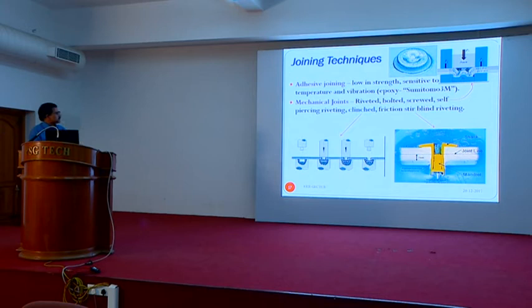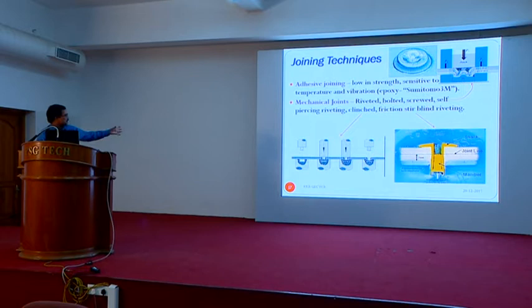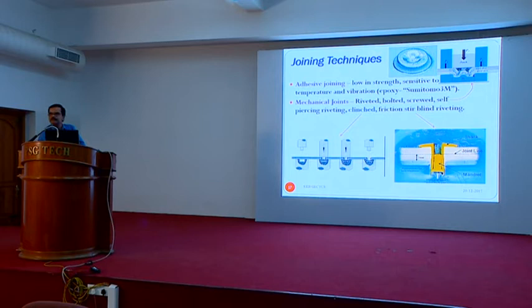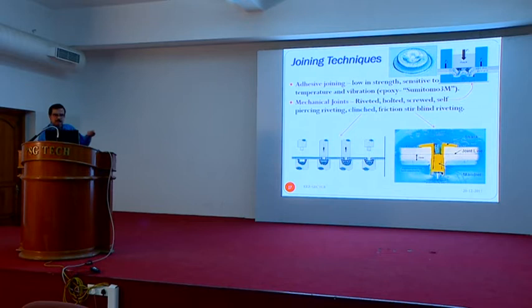Adhesive bonding has low strength and is sensitive to temperature and vibration, but is still in use together with operations like clinching. Clinched joints are made using a die and punch — sheets pass under the punch and are clinched to form joints. Another technique is self-piercing riveting, used in automotive panel making. For aluminum sheets it can be done without drilling, but for steel and aluminum a hole must be drilled in the steel plate. Friction-steer blind riveting uses the rivet itself as a friction stir tool to pierce through.